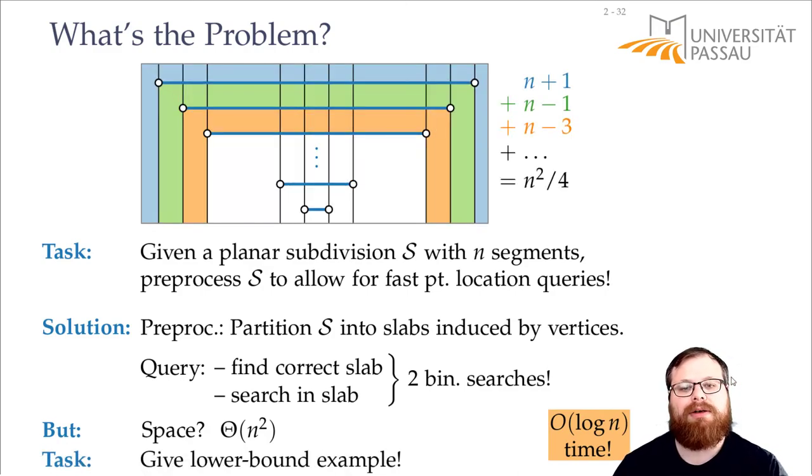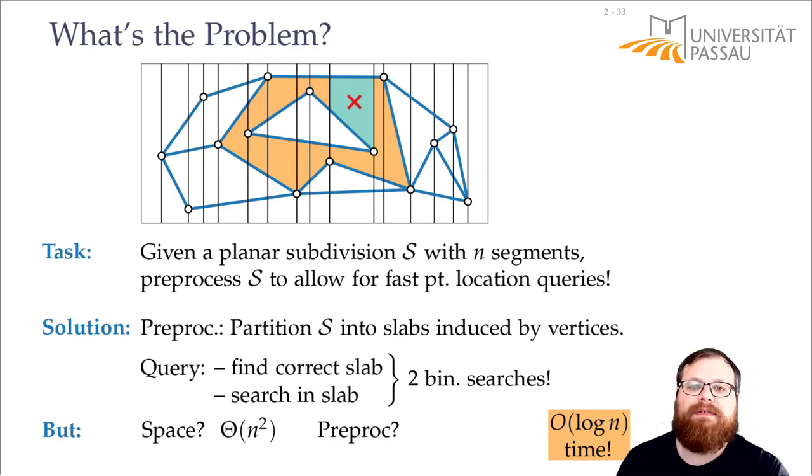And the second bad thing is if we only look at the time to pre-process this. We have a data structure. We have binary search trees that have total size order of n squared. To build a binary search tree of size order of n you need order of n log n time. So just to create these binary search trees we also need order of n squared log n time. Maybe that's too much for us. Maybe we don't want to spend so much time. So what we want to do is we want to find a better pre-processing where we can store our data in less than theta of n squared space and it takes less than order of n squared log n, preferably even less than order of n squared time to create the data structure.